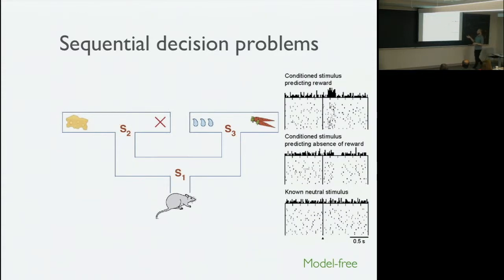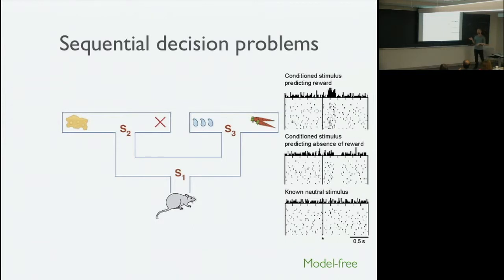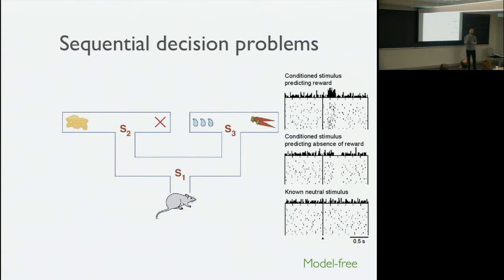One reason people in neuroscience are particularly interested in model-free reinforcement learning and temporal difference learning is that the learning signal needed to update the lookup table — the prediction error signal — seems to be reported by the phasic firing of dopamine neurons. Dopamine neurons burst in response to unexpected reward, pause in response to omission of expected reward, and when reward is fully expected, there's no phasic firing. These are key signatures that led people to think dopamine neurons are reporting this reward prediction error. But the dopamine stuff is not important for this talk — it's just to motivate why we're interested in this model.